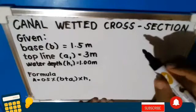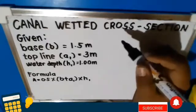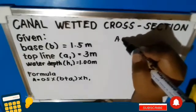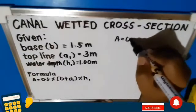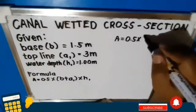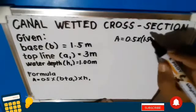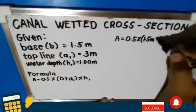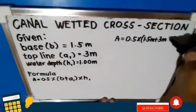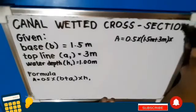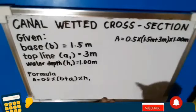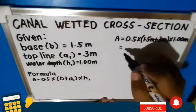The formula that we are going to use is A equals 0.5 times the base plus A sub 1 the top line, times H sub 1 the water depth. Where A equals 0.5, that is constant, times 1.5 the base, plus 3 meters the top line, times 1 meter the water depth.